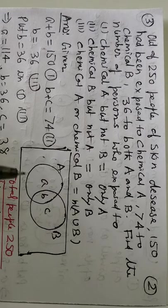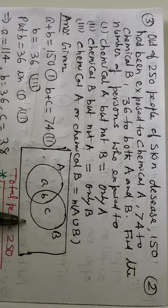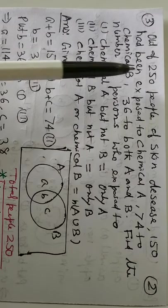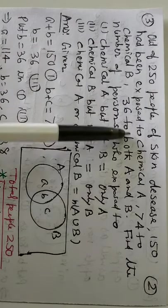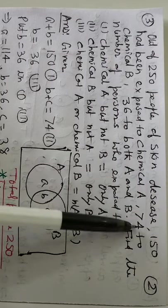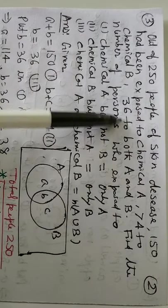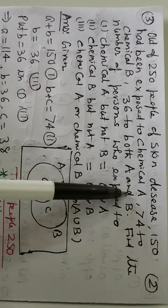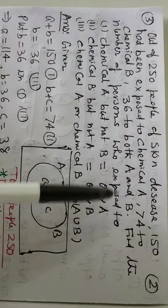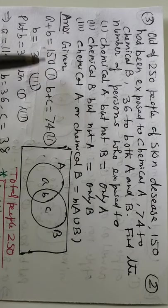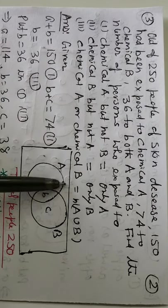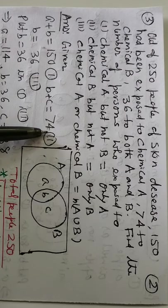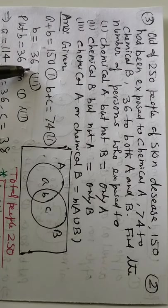Now next, again same problem, the two sets have been displayed. Like earlier, you can go through this. There are 250 people and both are suffering from skin disease. 150 is exposed to chemical A, 74 to chemical B, 36 to both. So A plus B, 150, chemical A. B plus C, chemical B, 74. And both chemical A and B, this is 36.